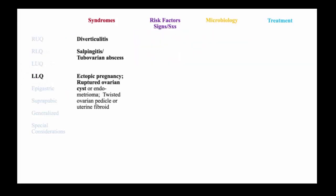Left lower quadrant pain has a similar differential diagnosis to right lower quadrant pain, where diverticulitis tends to present in the left lower quadrant more commonly than the right. Salpingitis and tubo-ovarian abscesses similarly present on either side, and non-infectious pelvic causes in women, including ectopic pregnancy and ovarian cysts, should be considered.